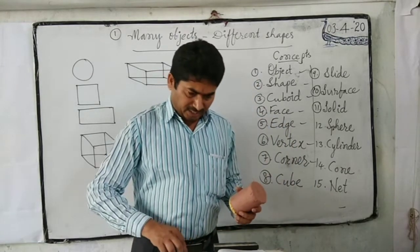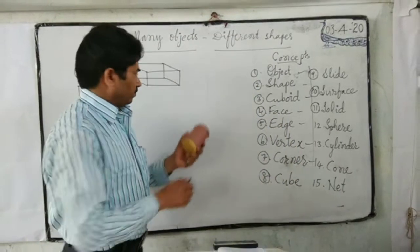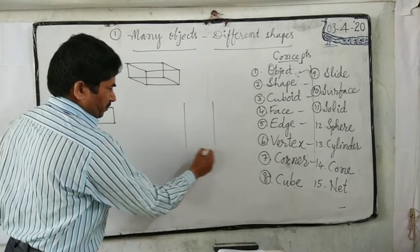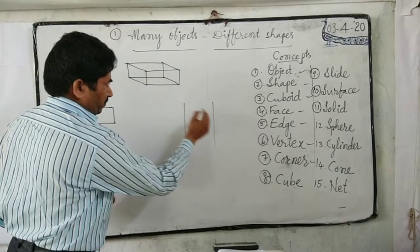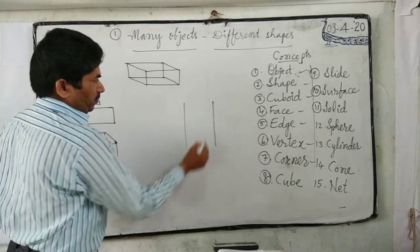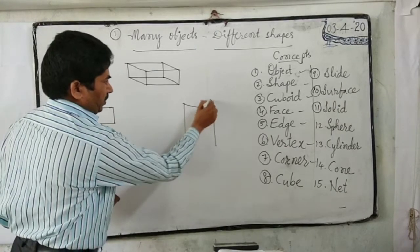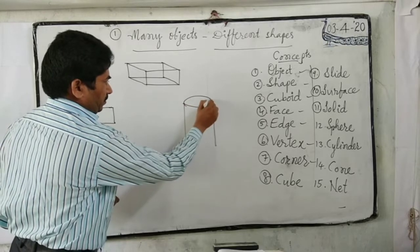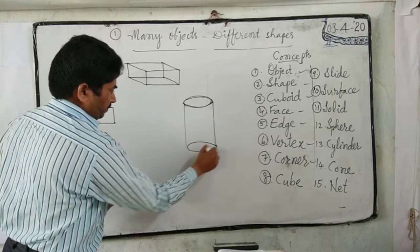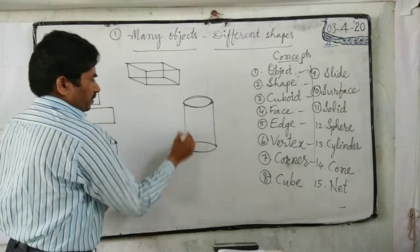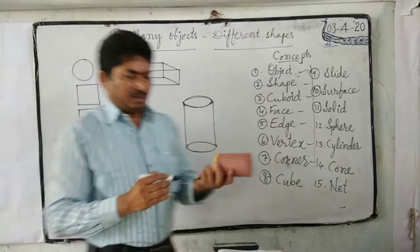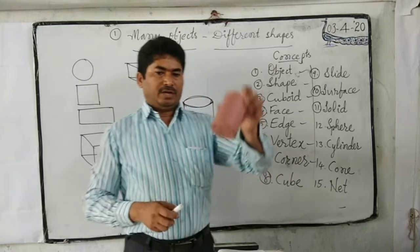Next, cylinder. An object with two equal straight sides and two equal circular ends is called a cylinder.